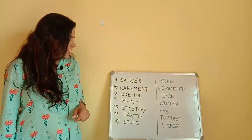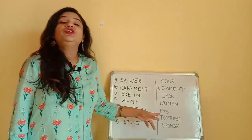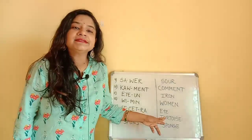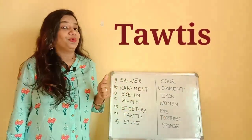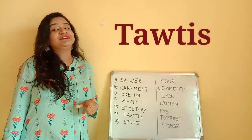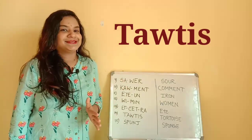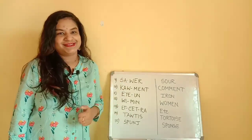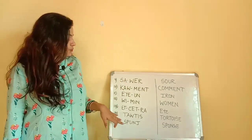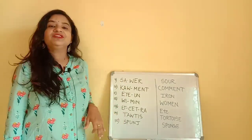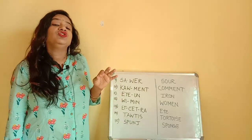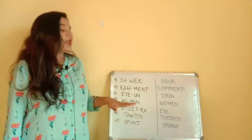Now, tortoise. The correct pronunciation is 'tortoise', 'tortoise'. You pronounce this word as 'tortoise'.